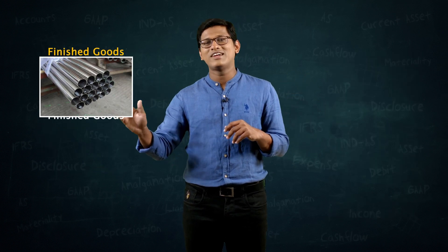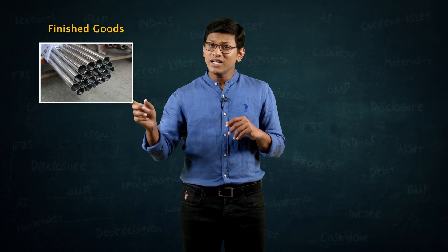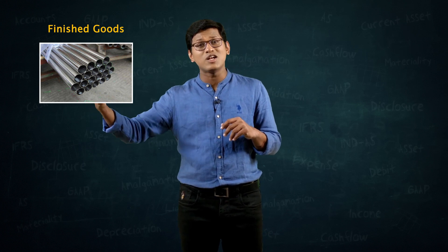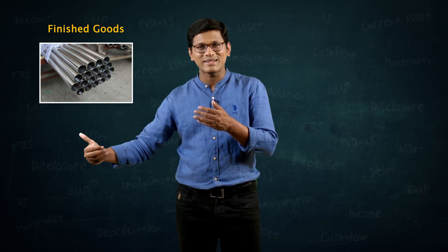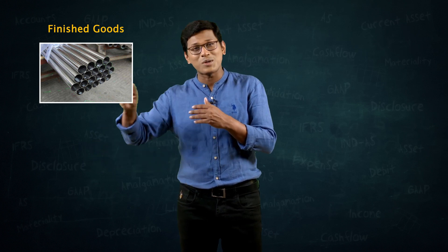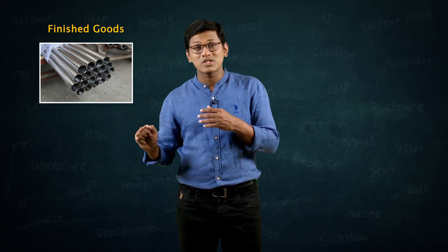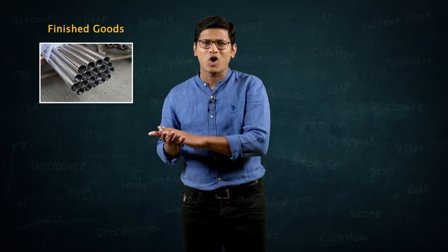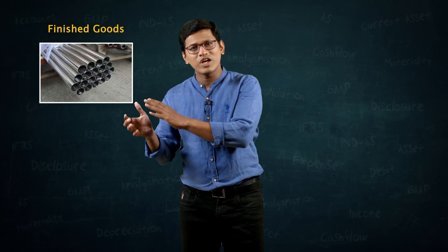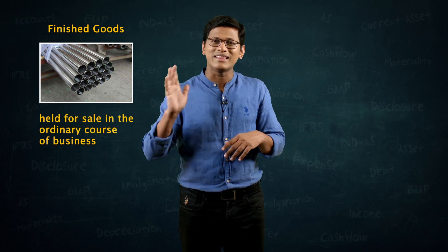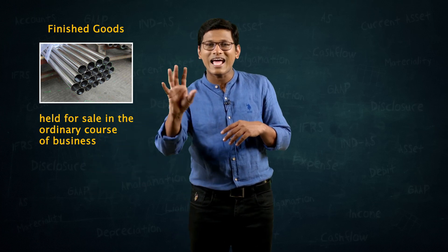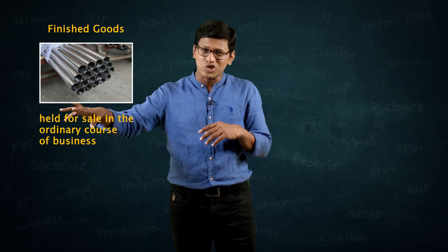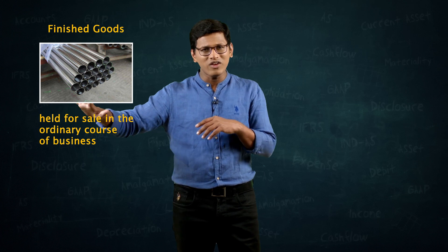Let's first talk about inventory of finished goods. In our earlier discussion, say there is a company which has purchased steel pipes. Somebody who buys steel pipes — say they have not yet sold those pipes, those pipes which are still remaining. The pipes which are not yet sold, but we want to just sell them. We are holding on to these assets today in order to sell them. Such items which we wish to sell in that as-is condition, we call them finished goods. They are inventory of finished goods, and that is definitely a part of our inventories.